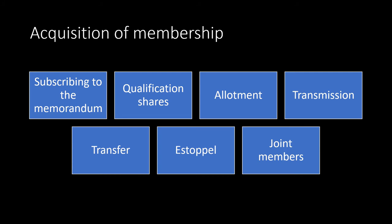Regarding estoppel in membership: if you allow the company to write your name in the register of members when you are not actually a member, afterwards you cannot deny your liability as a member. Regarding joint members: more than one person can together hold shares and become a member. But in case of joint membership, the voting right is given to only one person — generally, for voting and other purposes, the person whose name appears first will be considered as the member. These are the various methods by which one can acquire membership.